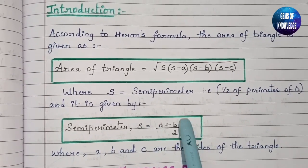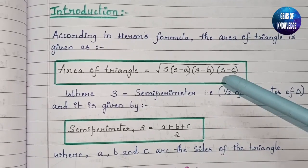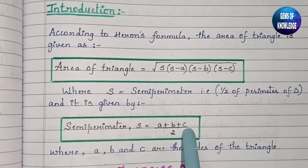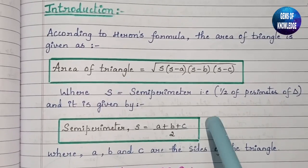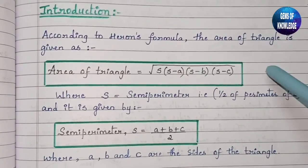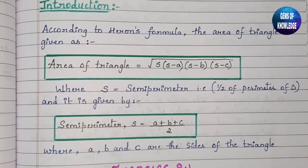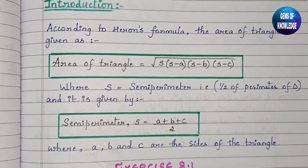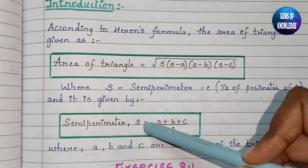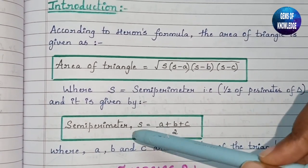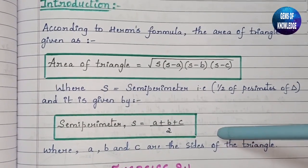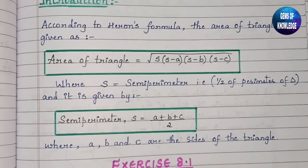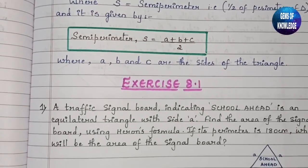A, B, and C are the three sides of the triangle. A is the measurement of one side, B is the measurement of the second side, and C is the measurement of the third side. You can assume any side as A, any as B, and any as C. Now let us quickly start with Exercise 8.1.